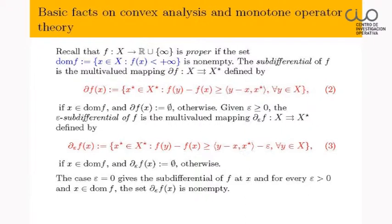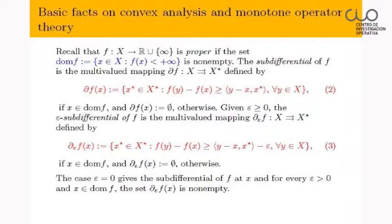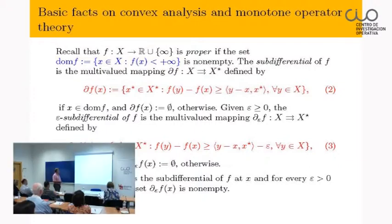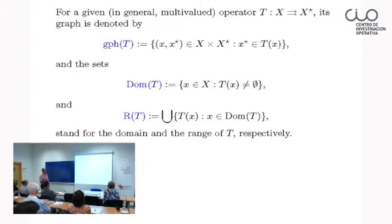For basic facts: the subdifferential is defined in the standard way, and when epsilon is zero, it is exactly the subdifferential. For notation for operators and set-valued mappings, three sets are important: the graph of an operator, the domain of an operator — the set where it has non-empty values — and the range of an operator.